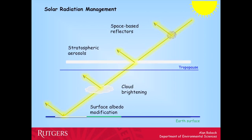There are four main SRM ideas. First, space-based reflectors — considered very expensive and uncontrollable, with not much work done on them. The idea that's gotten the most work is creating a cloud in the stratosphere like volcanoes do. There's also the idea of seeding low-atmosphere clouds over oceans to make them brighter. Finally, brightening the surface by painting roofs white or engineering crops — but that turns out not to be very effective. The two ideas in the middle — specifically stratospheric aerosols — have gotten the most attention.